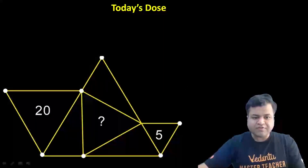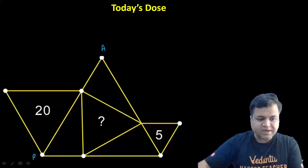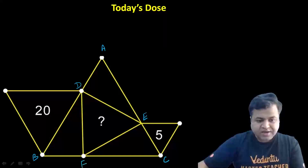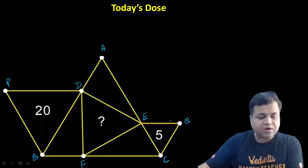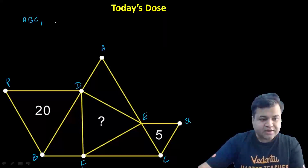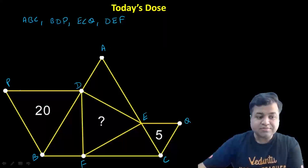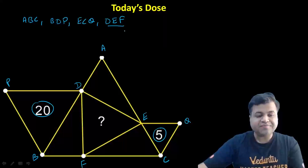In this question, we have 4 equilateral triangles. For the big equilateral triangle, let's name it ABC. There is a point D on side AB and a point E on side BC. DEF is again an equilateral triangle, and BDE is also an equilateral triangle. So we have 4 equilateral triangles in total. We are given the areas of 2 equilateral triangles: 20 and 5. We need to find the area of the equilateral triangle DEF.